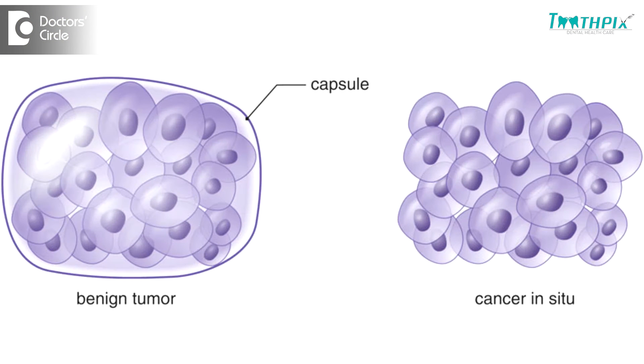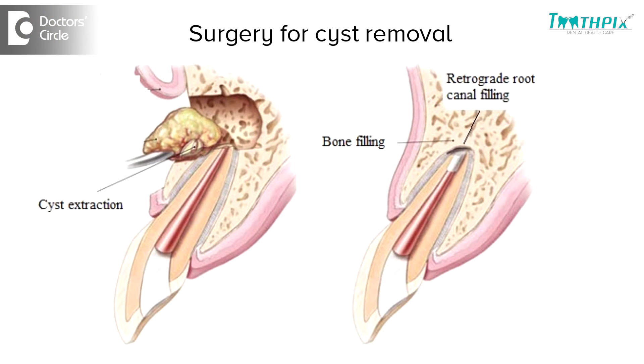After surgery, sometimes there is a recurrence of cysts, and there are a lot of reasons for that. First of all, we should know what kind of cyst it is — whether it's really a cyst or something else, whether it's a benign tumor or a malignant tumor. We need to understand all these aspects of a cyst or a swelling inside the mouth or bone, and then assess what kind of surgery has been done — whether it was partially excised or completely removed.